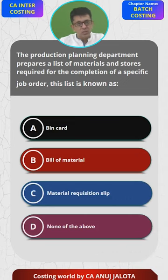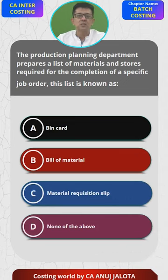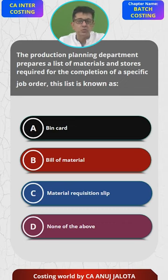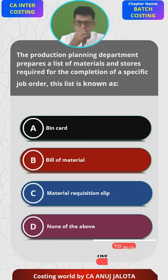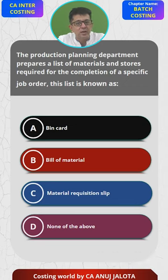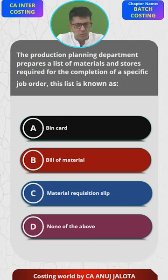Let me tell you where each thing is. Automatically we will know the answer. Bin cards are used in the stores department to keep a track of how many units came in the storehouse and how many units went out from the storehouse. It's basically a controlling kind of a card, maintained by the workers to keep inventory control. So this is not the answer.